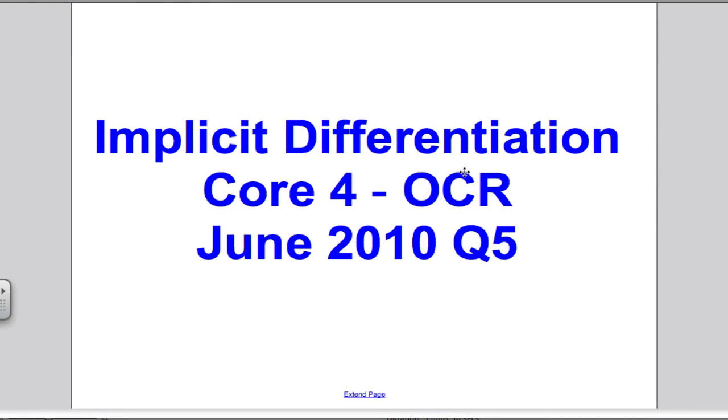In the following video, I will answer question 5 of the June 2010 Core 4 OCR paper. Again, it's on implicit differentiation. Here we go.